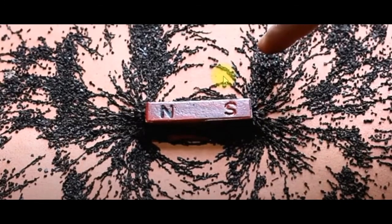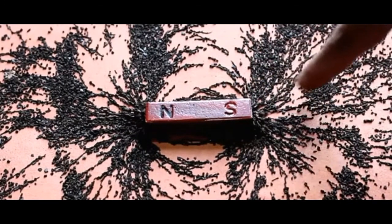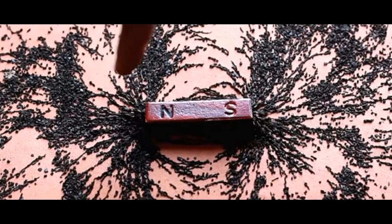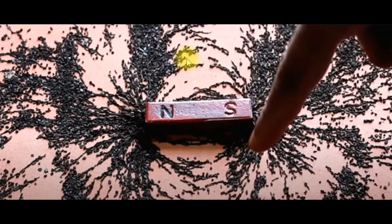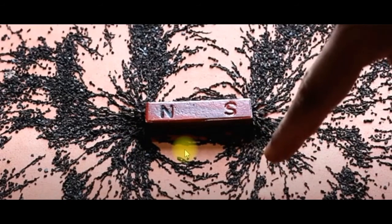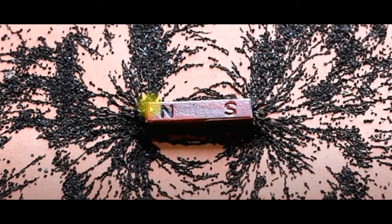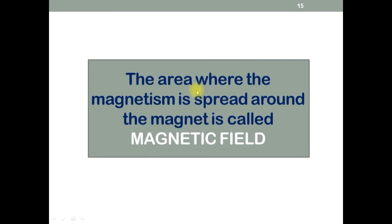Now you can clearly observe the field lines. This is how the magnetic force spreads around the bar magnet up to certain limited areas. The area where the magnetism is spread around the magnet is called the magnetic field.